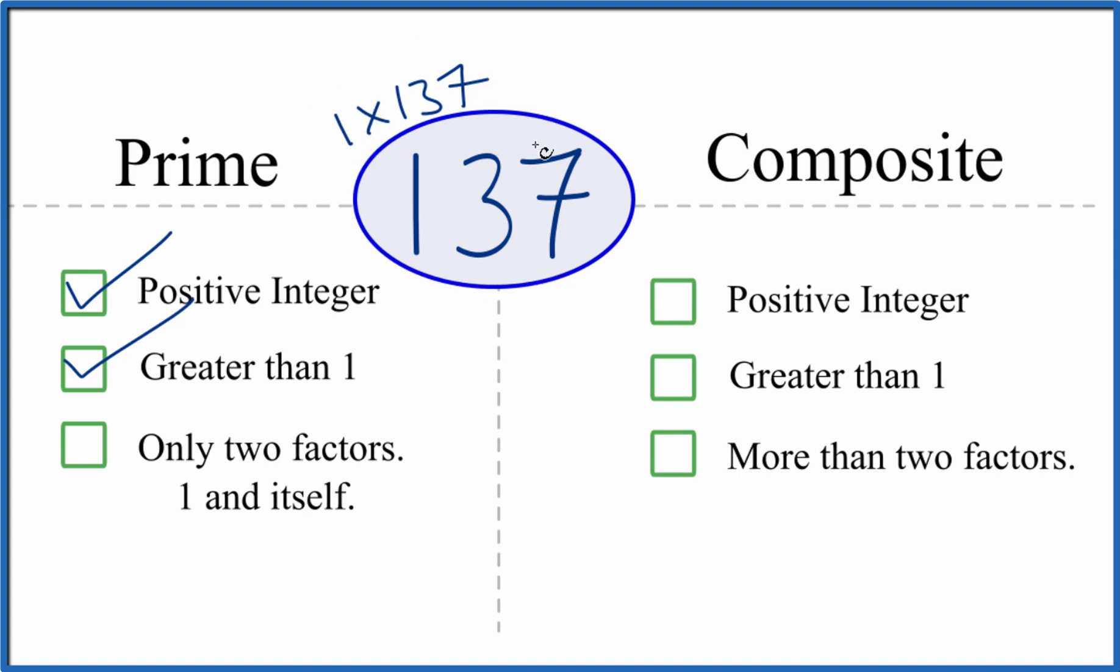It turns out that the only numbers that divide evenly into 137 are 1 and 137. So there are only two factors that go into 137. That makes it a prime number.